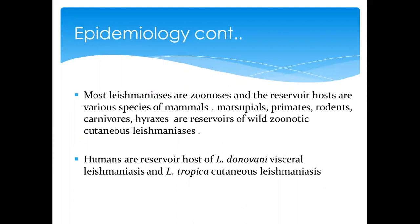Leishmaniasis can be zoonotic in terms of the reservoir host, as it can be found in other mammals like primates and rodents, which are reservoirs for the wild zoonotic cutaneous form. However, humans are also reservoir hosts for Leishmania donovani, which is prominent in visceral leishmaniasis, and Leishmania tropica, which commonly causes cutaneous leishmaniasis.